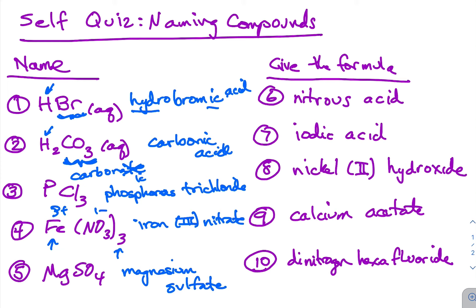Now coming over here to where we're asked to provide the formula — remember, 'dynamite is dangerous' — so this acid is going to contain the nitrite ion, so that's going to be HNO2, with NO2 minus being nitrite.